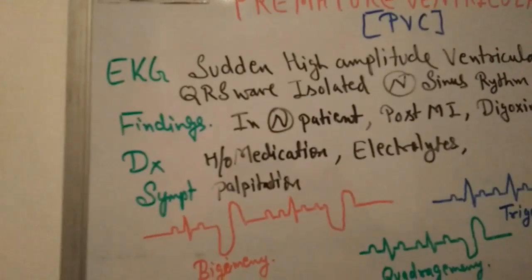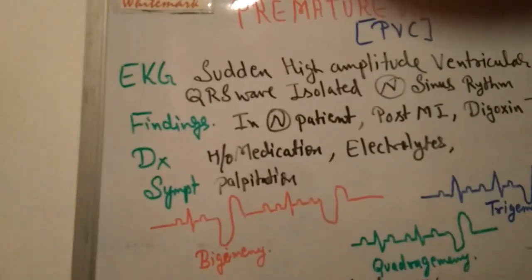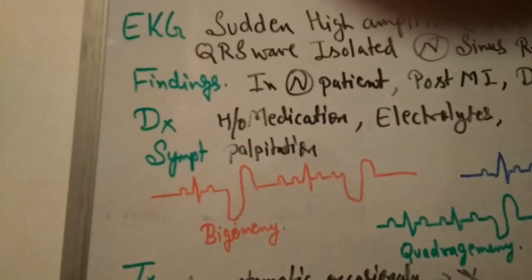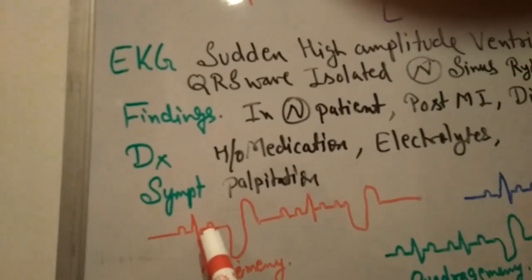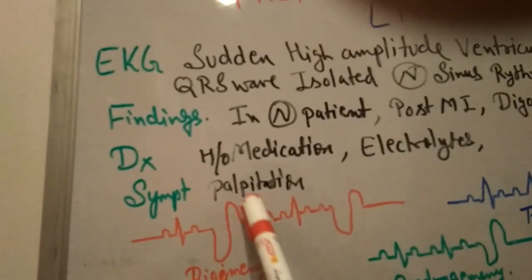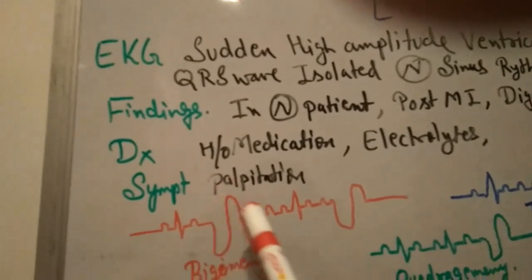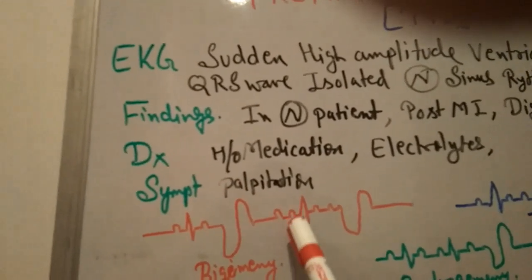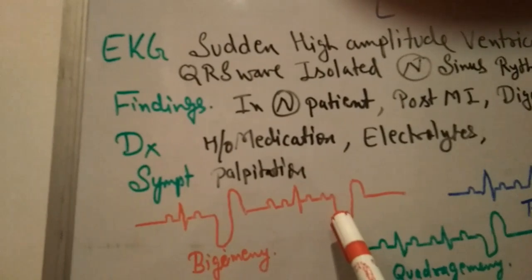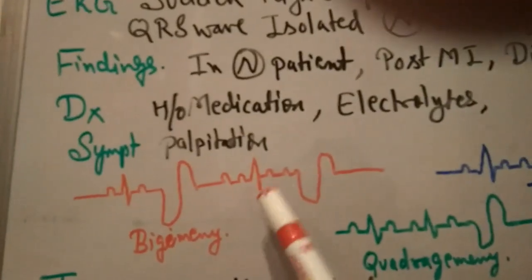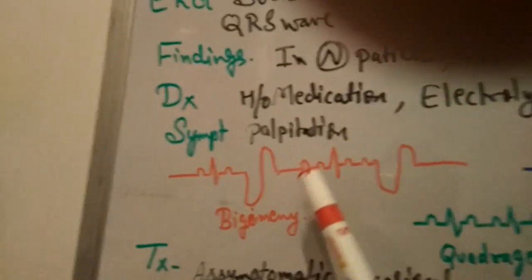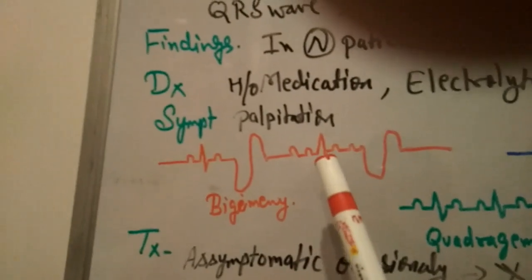Now I will explain bigeminy on ECG. In bigeminy, there is a normal QRS complex followed by a premature ventricular contraction — that pattern of 1 normal and 1 PVC repeating is why we call it bigeminy. If asymptomatic, no treatment is needed; if symptomatic, treatment is required.